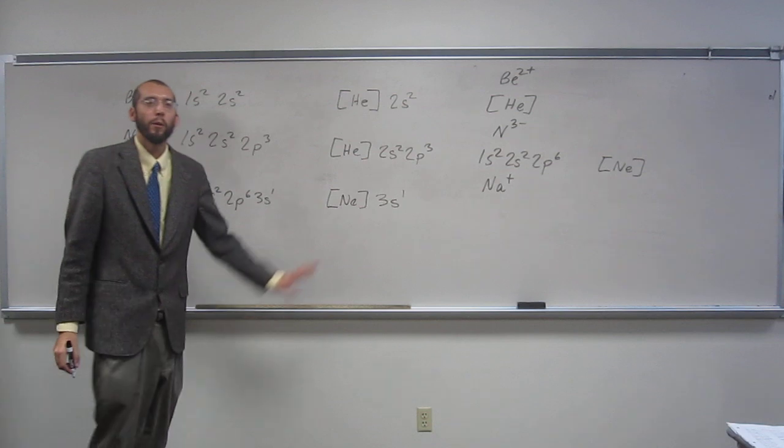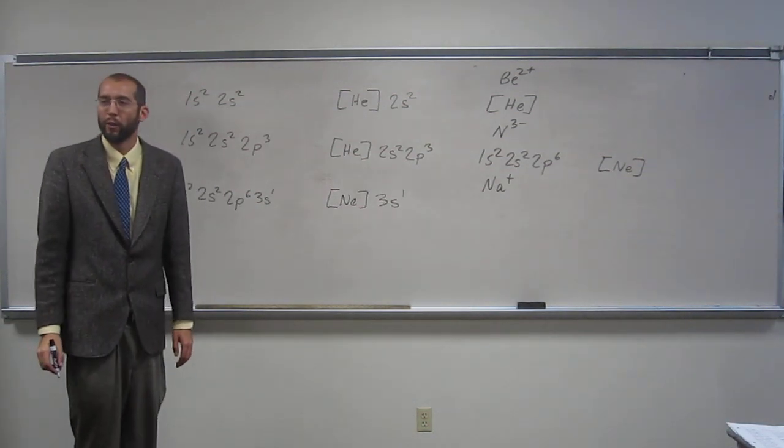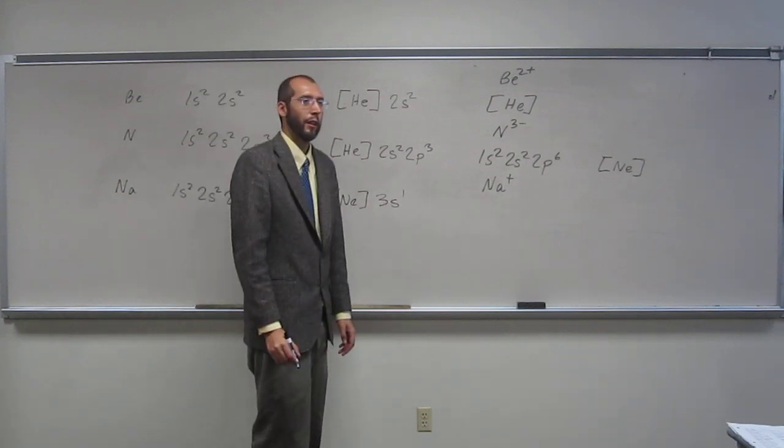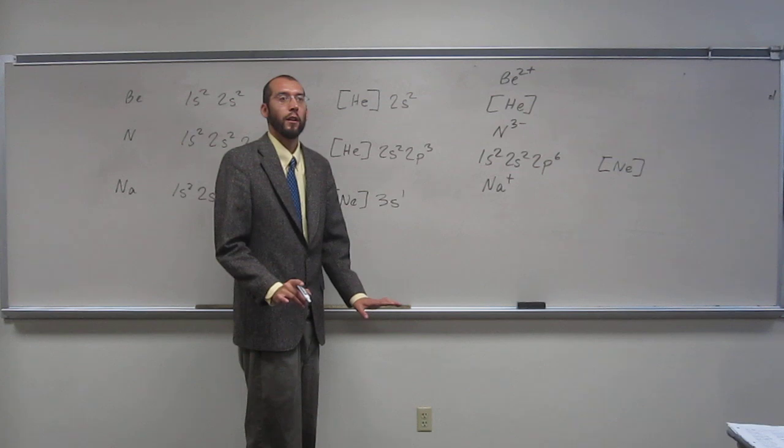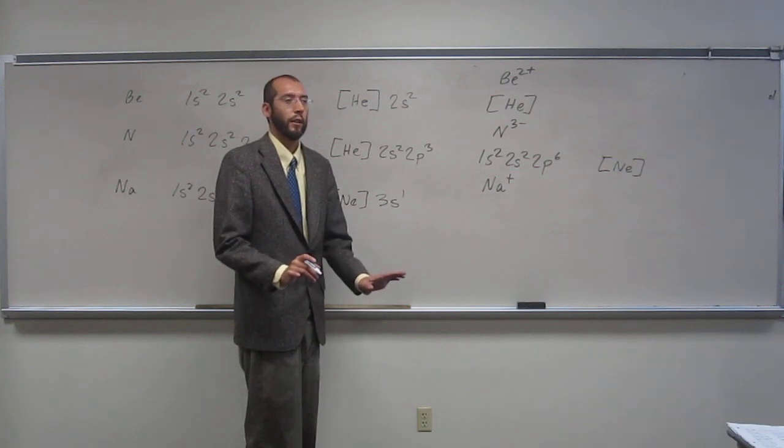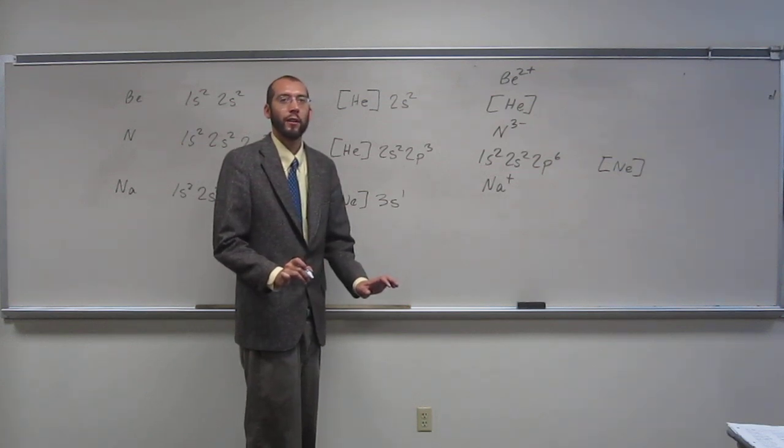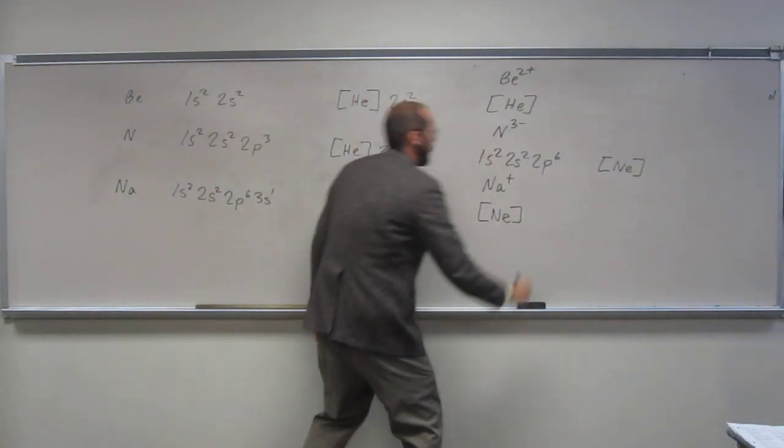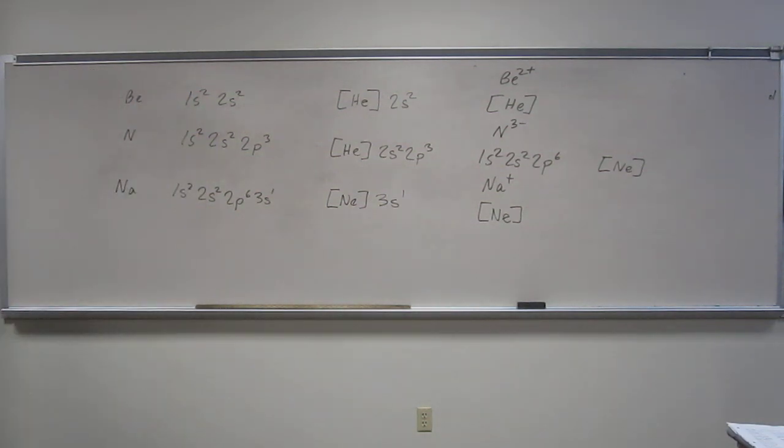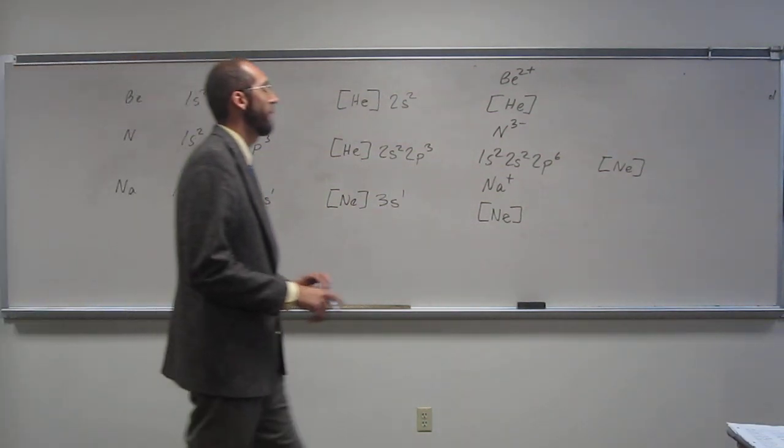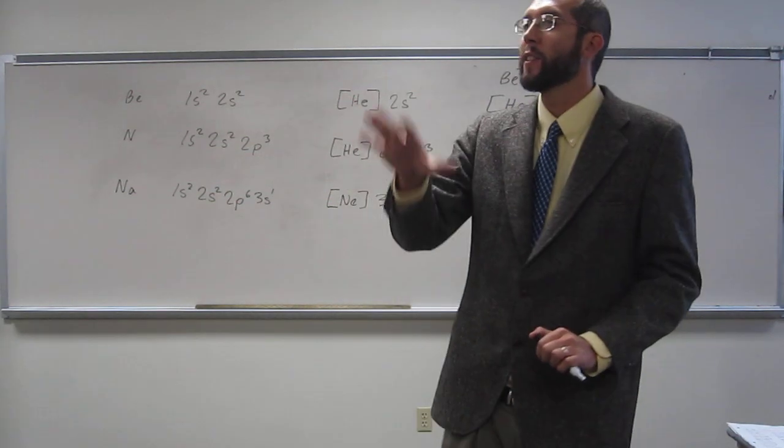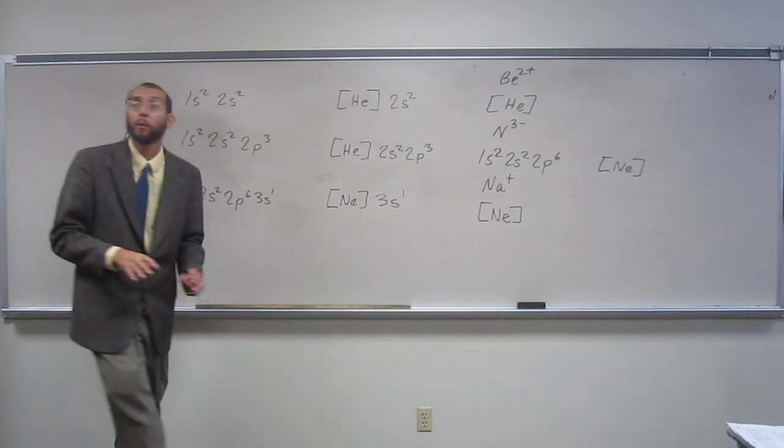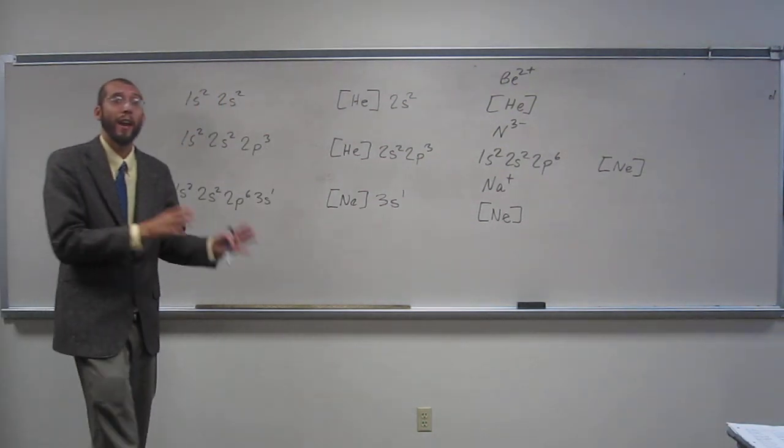Okay, and so what would be the condensed electron configuration? What would be the condensed electron configuration for Na+? The condensed electron configuration, the noble gas electron configuration. Neon. Okay, does that make sense? Okay, so if I asked you are any of these ions isoelectronic, do you guys know what that means, isoelectronic? So isoelectronic means the same electron configuration as.